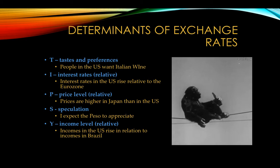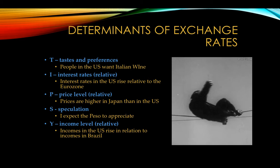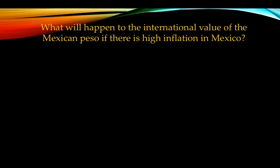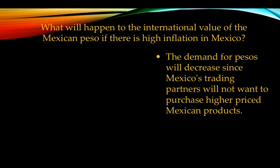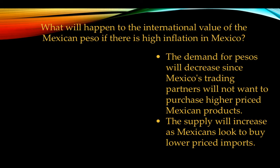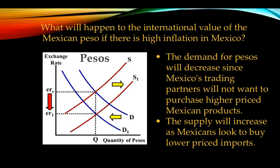Those are your five determinants for the supply and demand for currencies — TIPSY. Now, what will happen to the international value of the peso if there's high inflation in Mexico? Prices are high in Mexico — are people going to want to buy stuff from Mexico? No. We're going to demand fewer pesos, and Mexico is going to supply more pesos because they're going to look for cheaper products around the world. The demand for pesos decreases, the supply of pesos increases, and that causes the peso to depreciate.